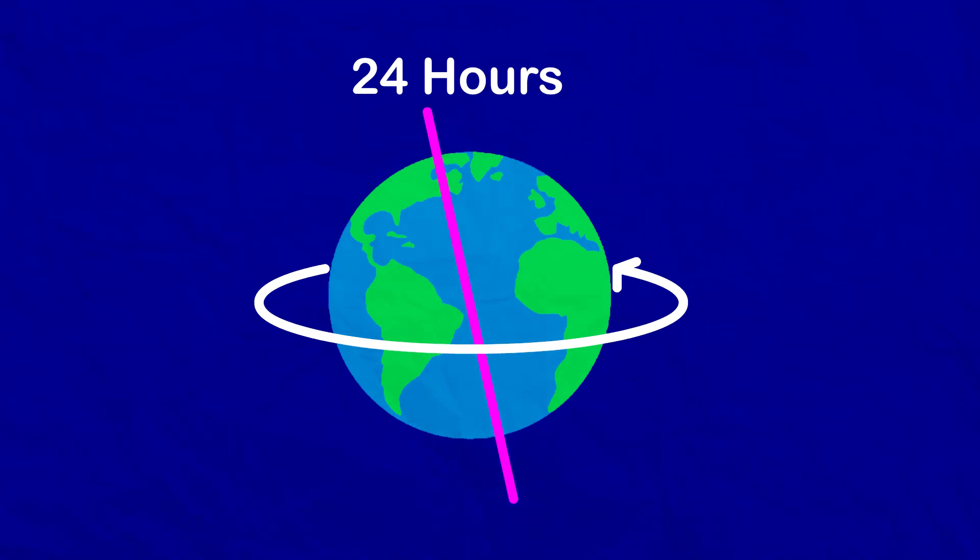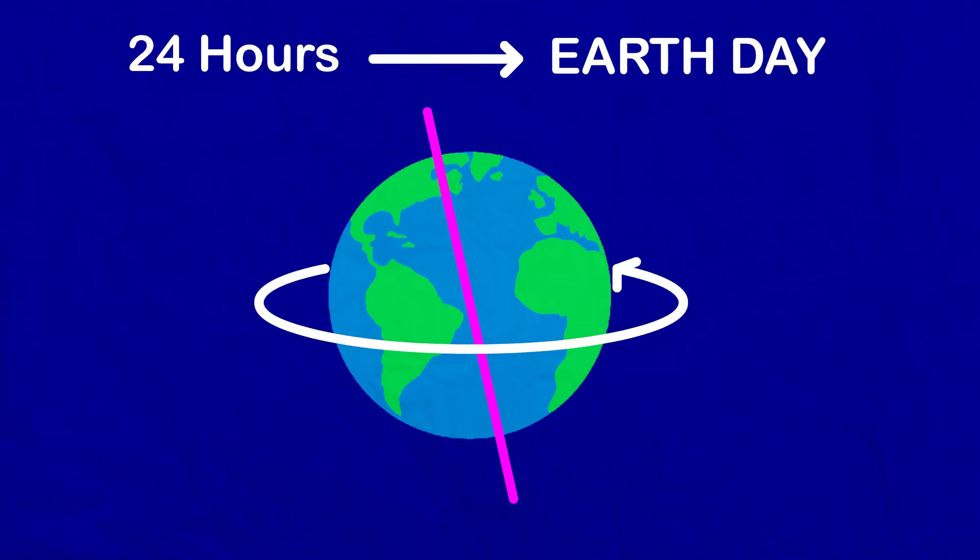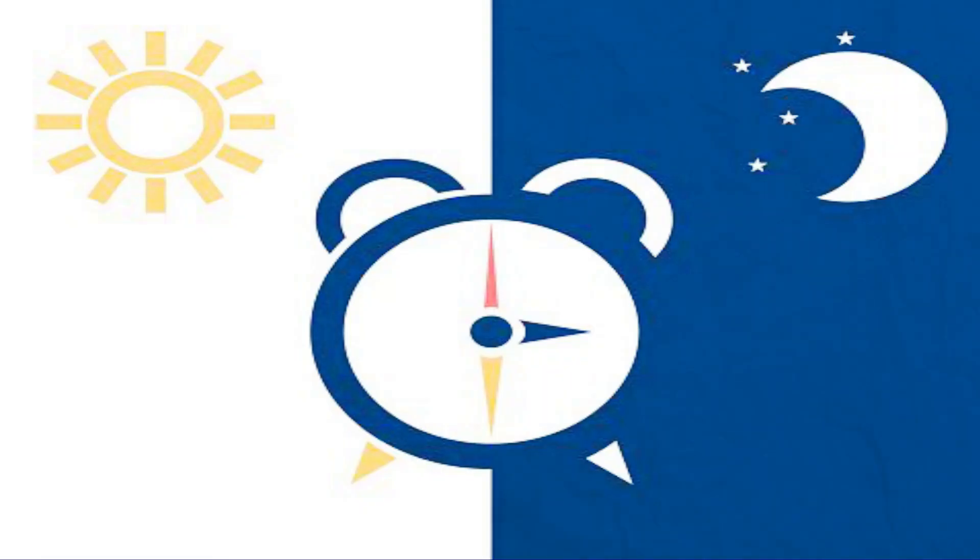The earth takes about 24 hours to complete one rotation around its axis. The period of rotation is known as the earth day. This is the daily motion of the earth.